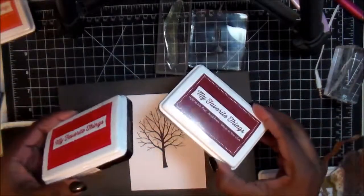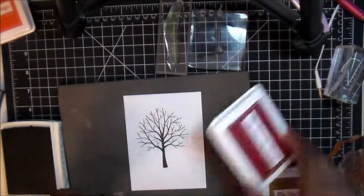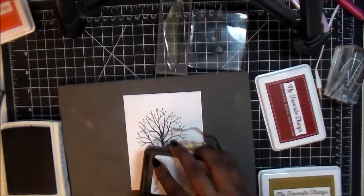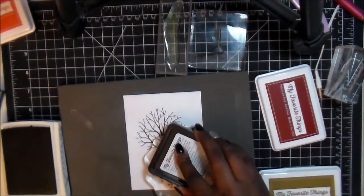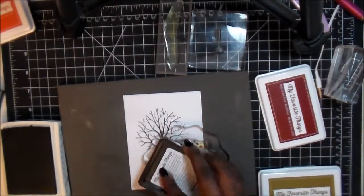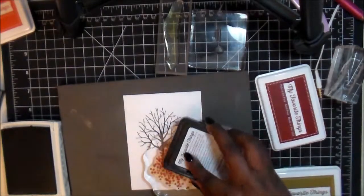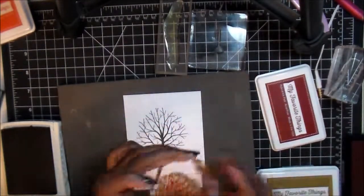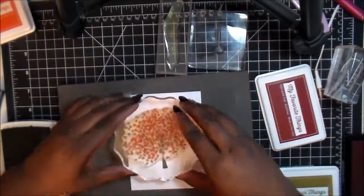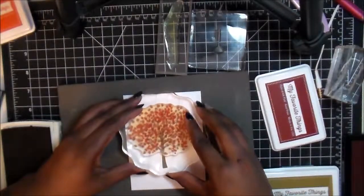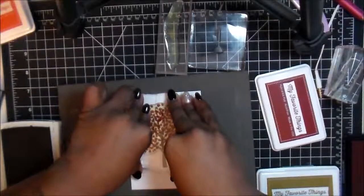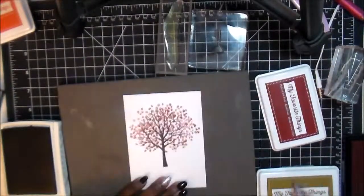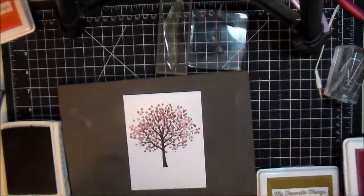And now I'm getting the two red colors together because we're going to do the leaves in two different colors and I'm starting out with the darker red which is the Brick Red. And we're going to just ink up the stamp and then I'm just figuring out exactly where I want to place it.